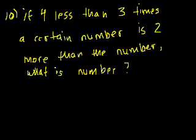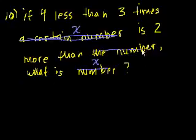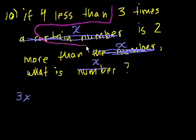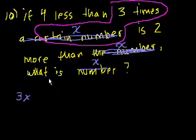So instead of a certain number, I'd like to replace that with x, right? Just because I'm going to have to solve for x. So I'm going to change this and say this is x. What is x more than the number x? So now we have: if 4 less than 3 times x is 2 more than x, what is the number? So what is 4 less than 3 times x? 4 less than 3 times x. Well, 3 times x is what? It's 3x, right? 3 times x. So if I took this part, 3 times x, that's 3x. And then 4 less than that is going to be minus 4, right?